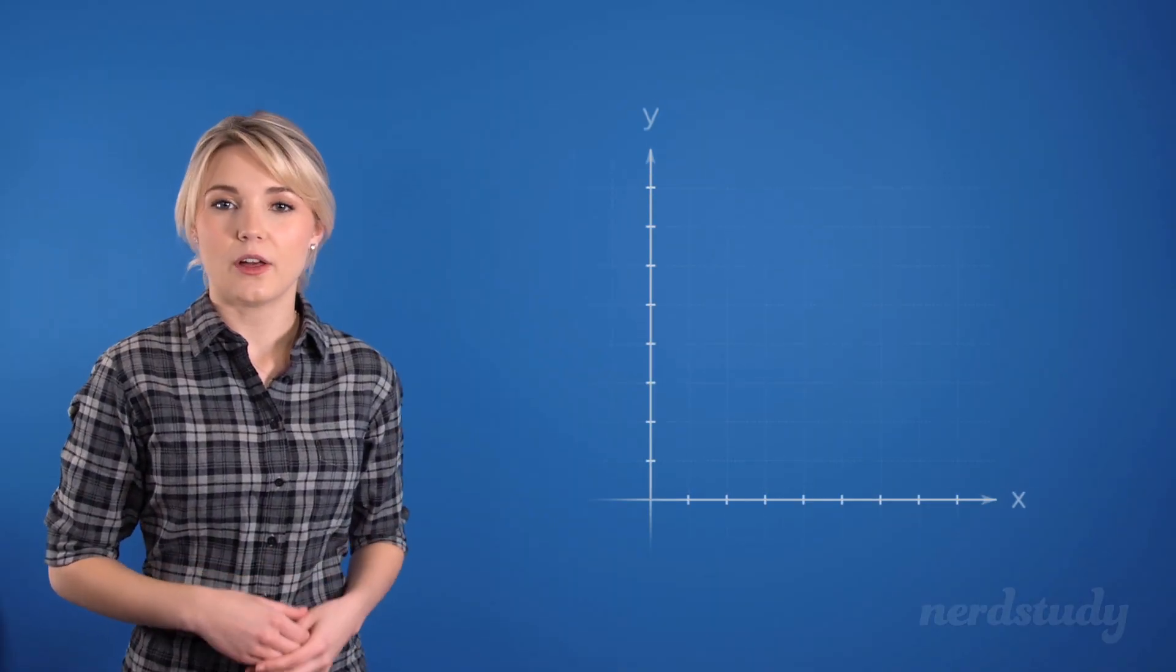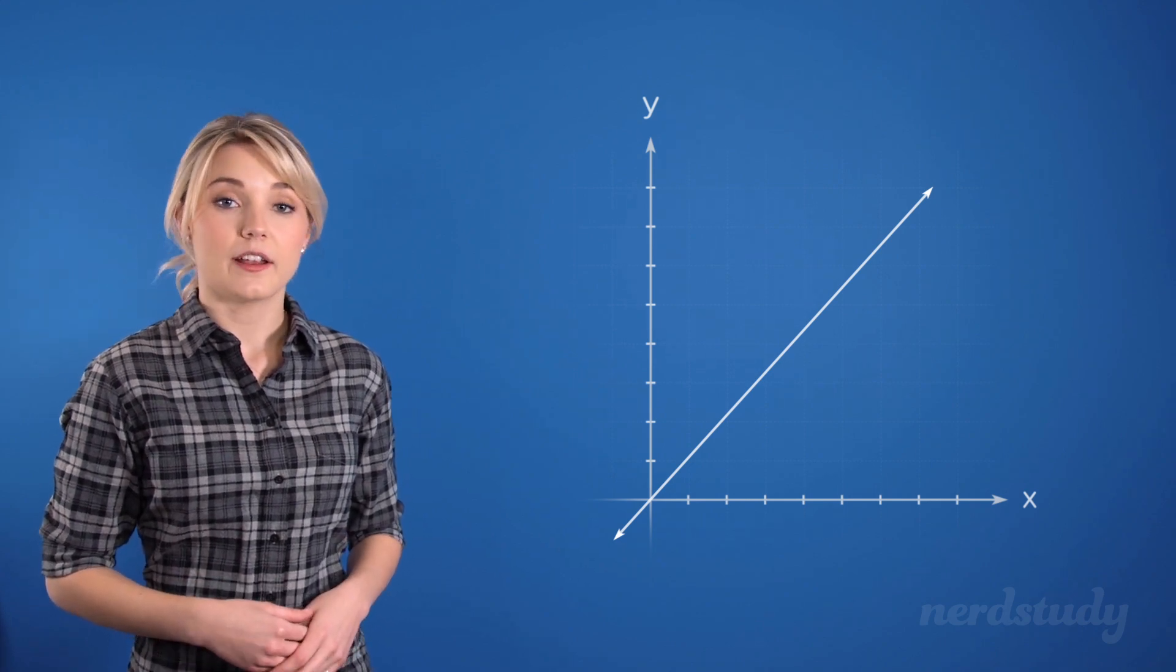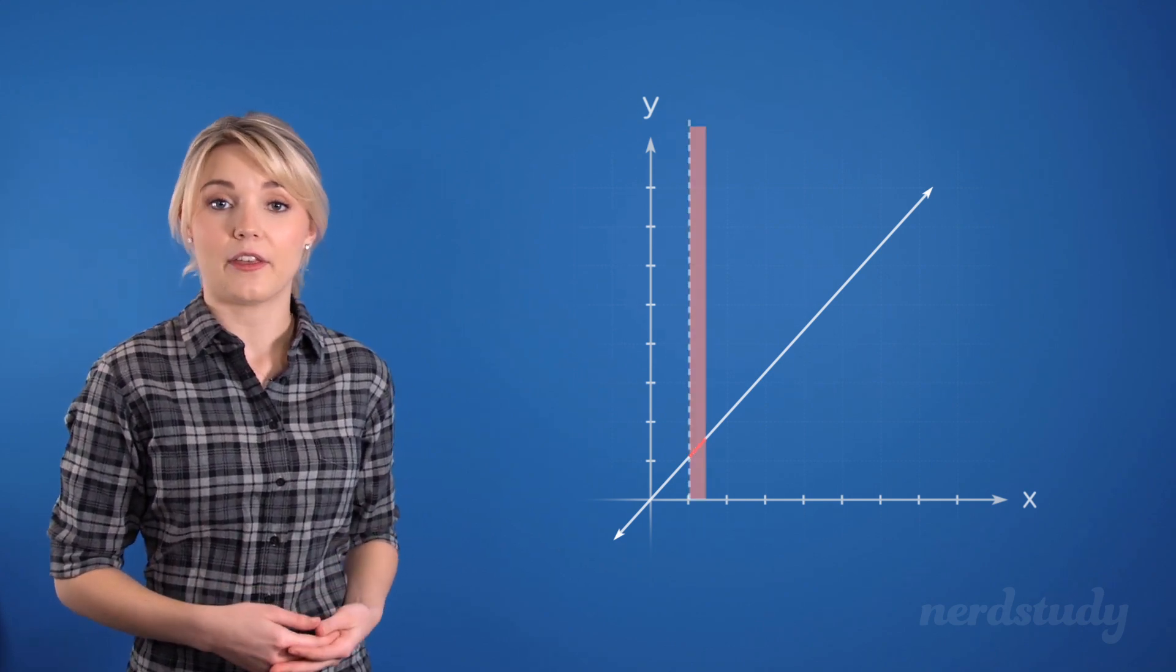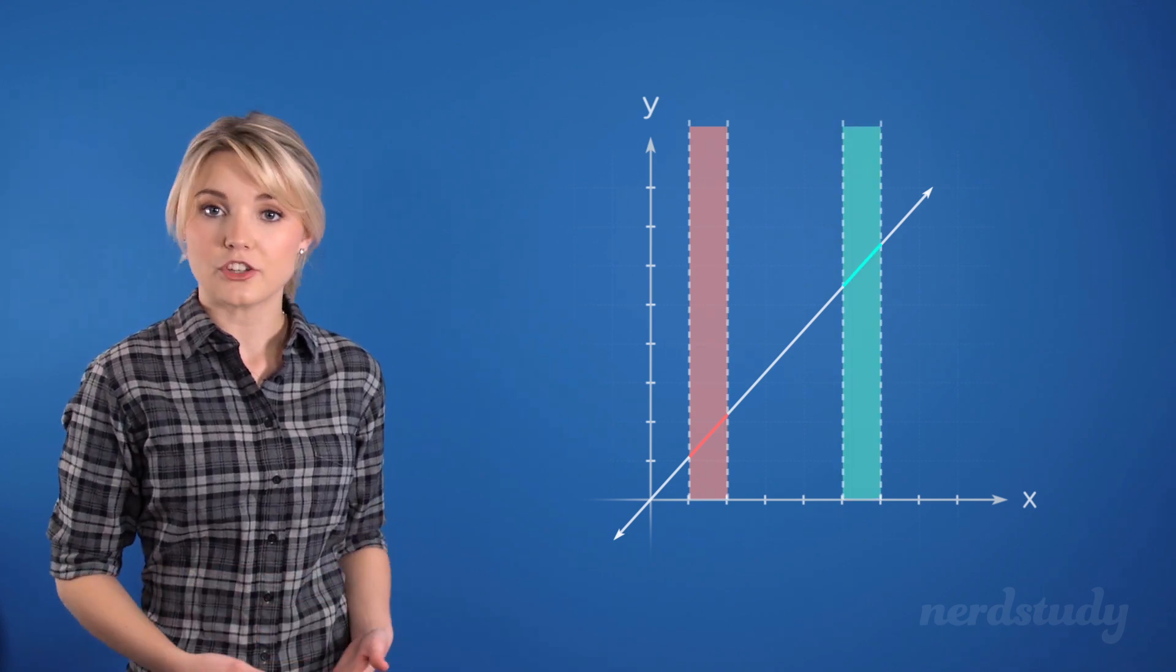If we take a look at a linear function, its change is always constant. You can expect the difference between one x value at any point to be the same as any other. It will simply be the slope of the equation.